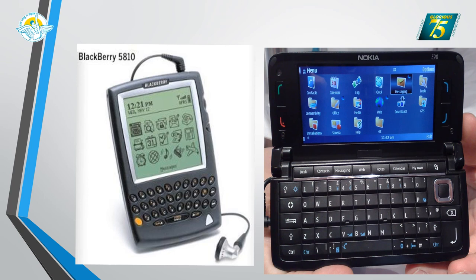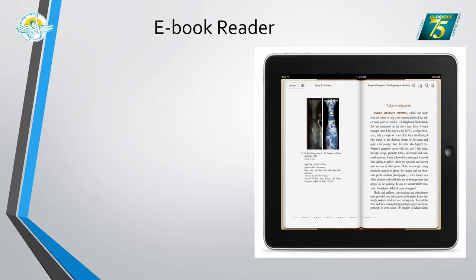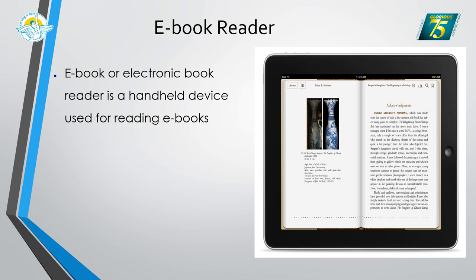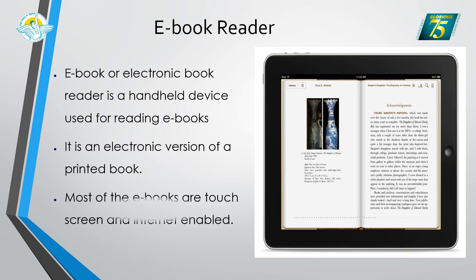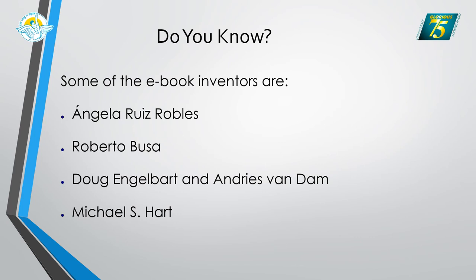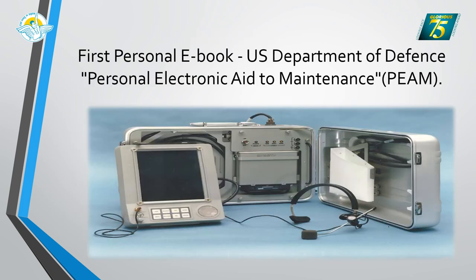Other early smartphones include the BlackBerry and Nokia E90. Next is the e-book reader. Kindle is an example of an e-book reader — a handheld device mainly used for reading e-books, which are electronic versions of printed books. Most e-book readers are touchscreen and internet-enabled. There are many e-book reader brands, and the first e-book was created for the US Department of Defense.